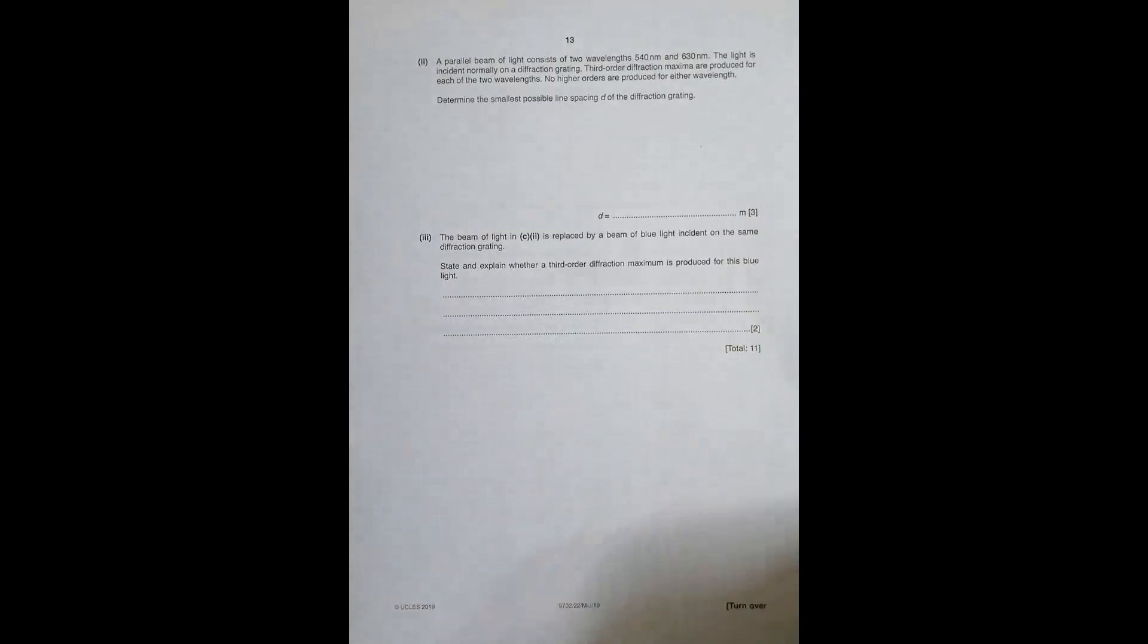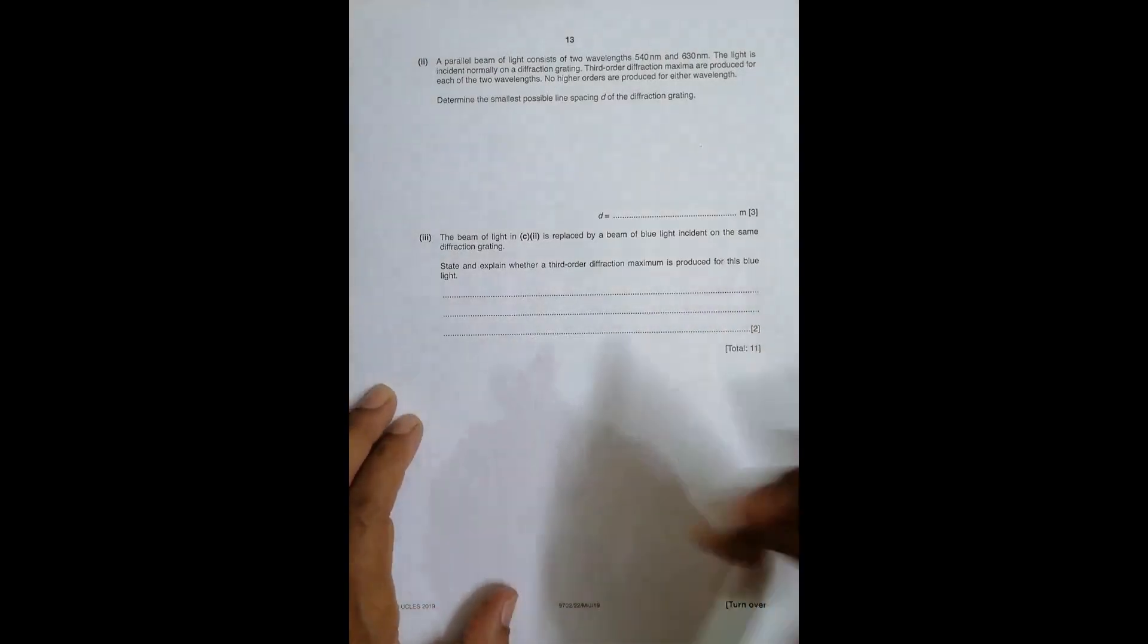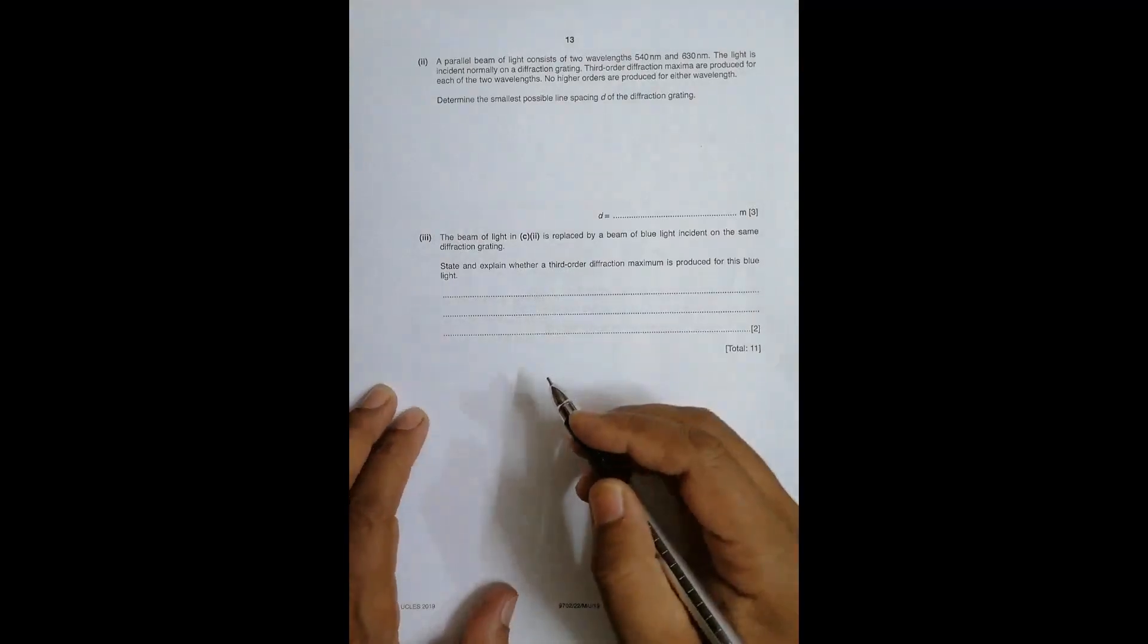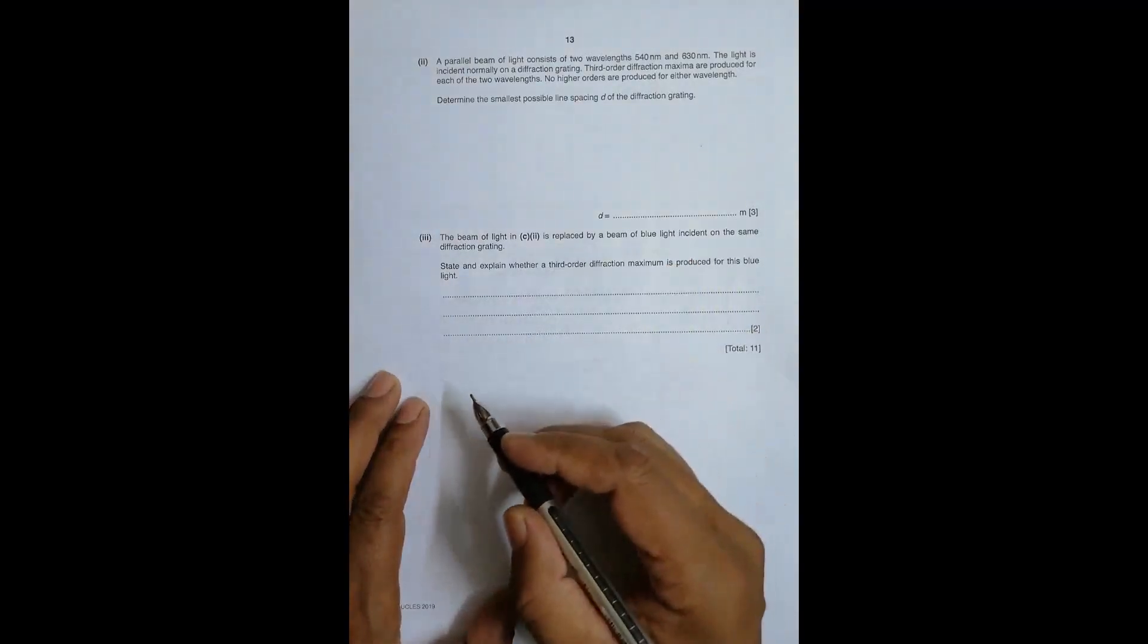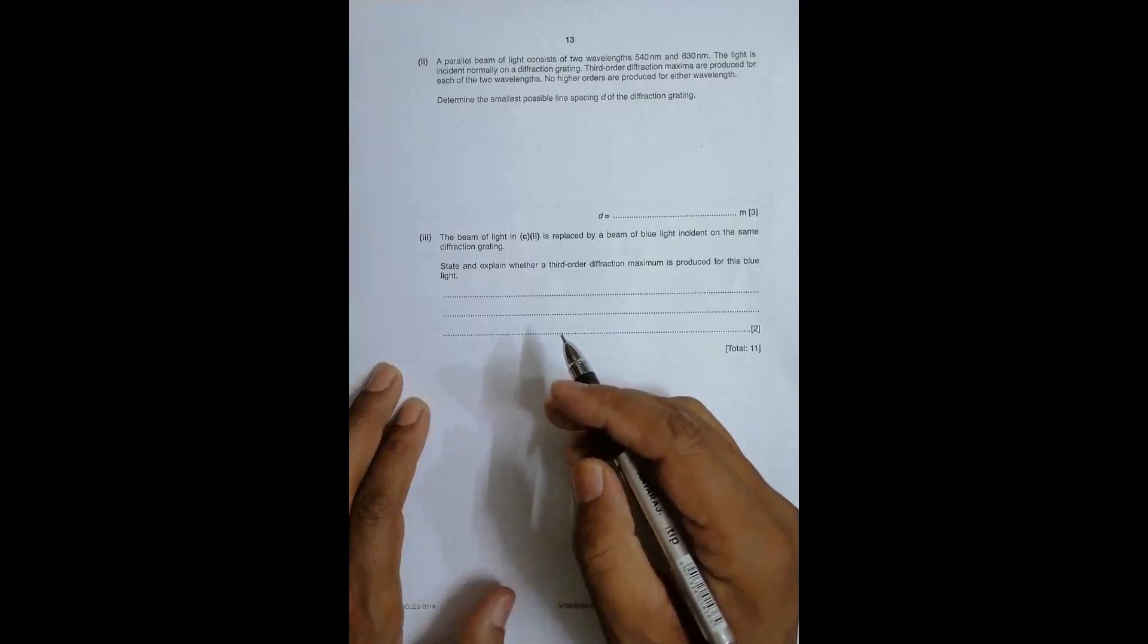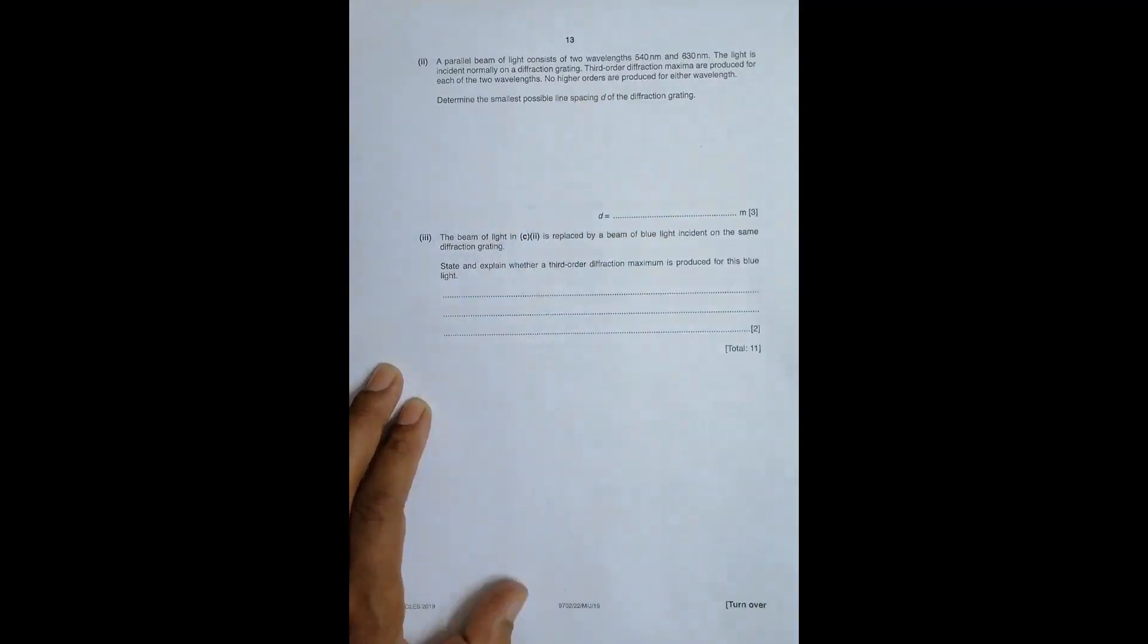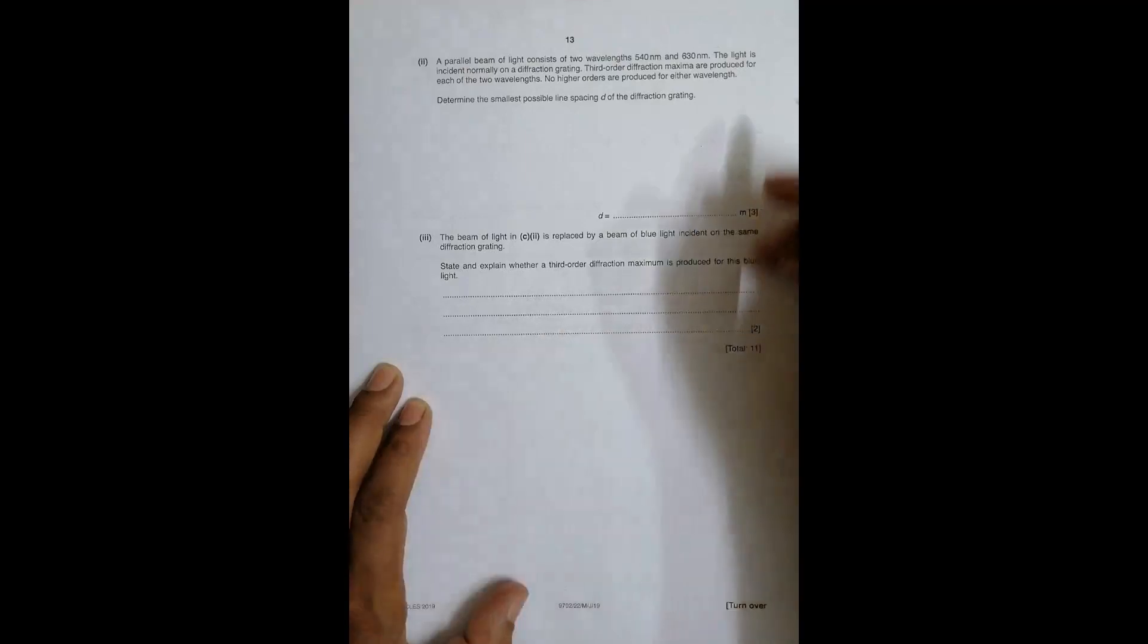Now the main thing that I wanted to deal with in this question is C2. It says that a parallel beam of light consists of two wavelengths: 540 nanometers and 630 nanometers, so they are of different colors. The light is incident normally on a grating. Third-order diffraction maxima are produced for each of the two wavelengths and there's no higher order.